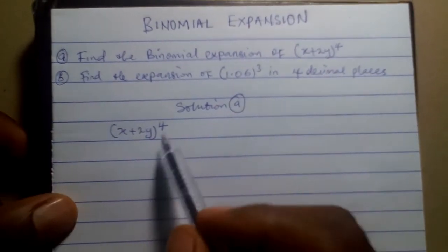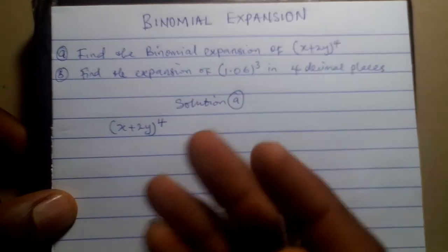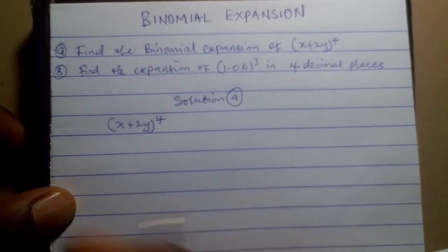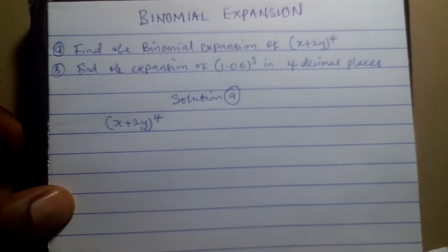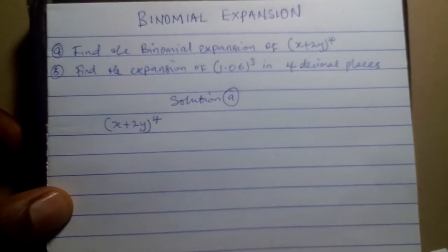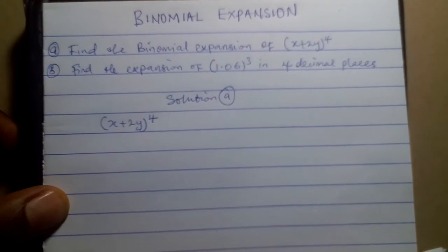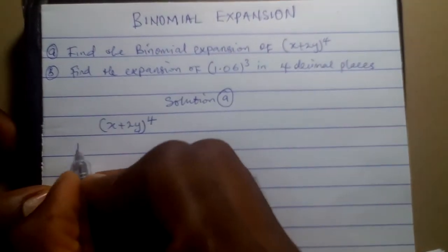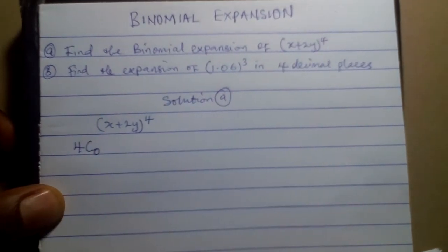Since this is raised to the fourth power, I will start with 4 combination 0, then 4 combination 1, 4 combination 2, and continue until I have 4 combination 4. If the power is 5, continue until 5 combination 5. If it is 6, continue until 6 combination 6. So here I'm going to start with 4 combination 0.